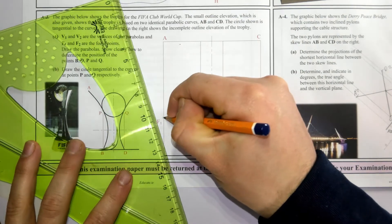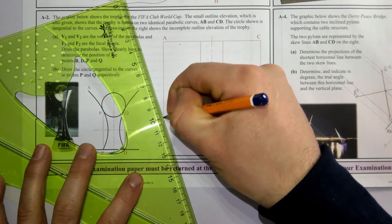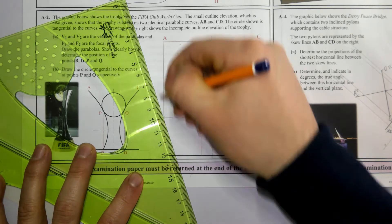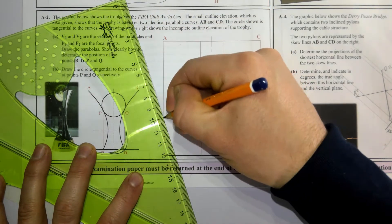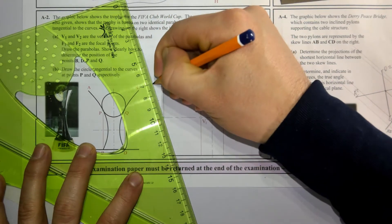So how to do that: I'm going to draw a line at any acute angle from F1. I'm going to mark four equal divisions on that line.